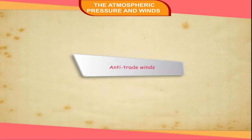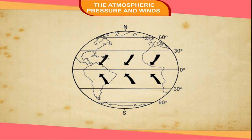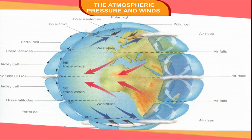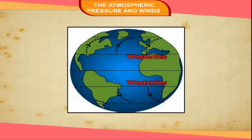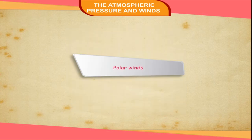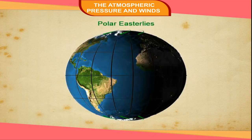Anti-Trade Winds: They tend to blow in the opposite direction of trade winds. They blow from the subtropical high pressure belt towards the subpolar low pressure belt. Their direction is southwest in the southern hemisphere and northwest in the northern hemisphere. West being the common direction, they are also called westerlies. Polar Winds: They blow from the poles towards the subpolar low pressure belt. Their direction is the same as that of trade winds, which is why they are also known as polar easterlies.